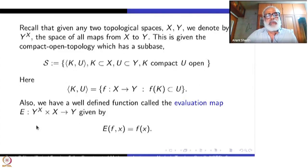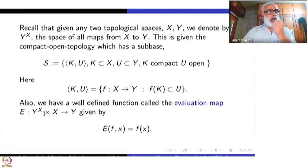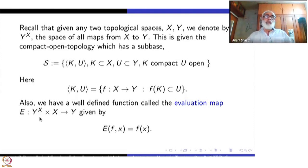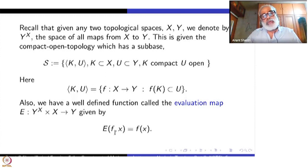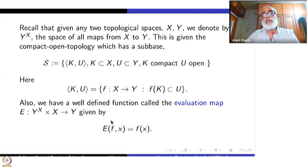There is an obvious map E from Y power X cross X to Y given by E of (F, x) going to F(x). If you fix x, the map F going to F(x) is nothing but coordinate projection. I would not like to call it that way because now we are not thinking of Y power X as a product space Y taken X times — there is also that topology — whereas now we are concentrating on compact open topology. If you fix x, the map F going to F(x) is obviously continuous even in the product topology.